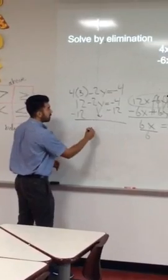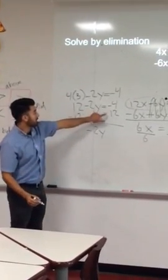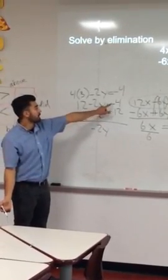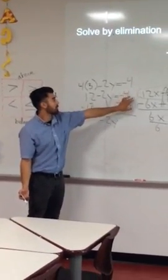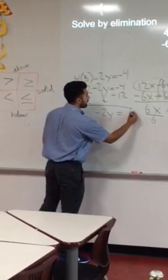I bring down my negative two y and now I have a negative and a negative. The way I like to tell the students is think about it like with money. If somebody owes you four dollars and they owe you twelve dollars you add the value of the numbers but you keep the same sign. So four plus twelve gives me sixteen and it's a negative.